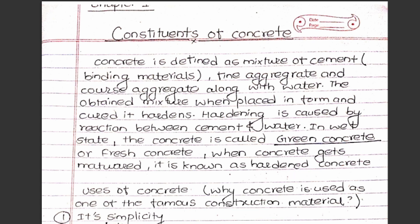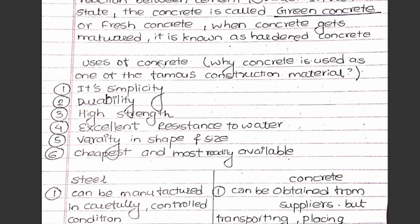So, the concrete differences: it is a mixture of cement, fine aggregate, and coarse aggregate along with water. In a wet state it is green concrete or fresh concrete. If the concrete matures, it becomes hardened concrete.